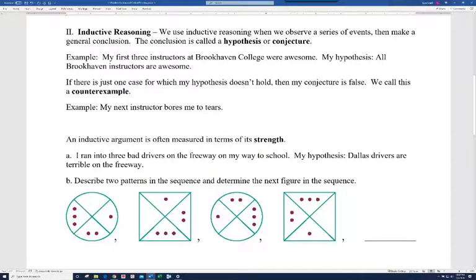Alright, let's move on to the next slide. Alright, so we're going to talk about inductive reasoning first. And inductive reasoning, well, it says we use inductive reasoning when we observe a series of events and then make a general conclusion. So we go from some specific events to some kind of conclusion or what's called a hypothesis or conjecture.